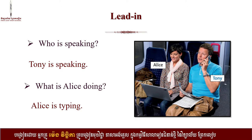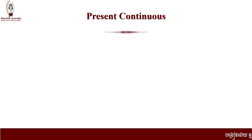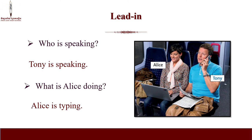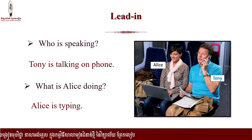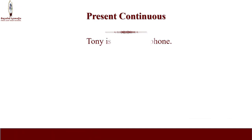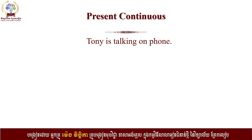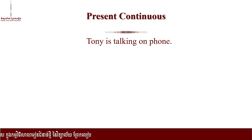Tony is speaking — Tony is on the phone. How about Alice, what is Alice doing? She is typing. Alice is typing. So Tony is speaking while Alice is typing. In this picture we can see Tony and Alice are currently doing different activities. Is there anything related to our lesson about present continuous?